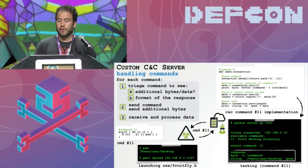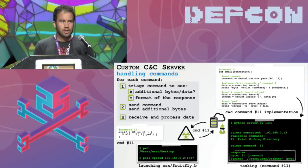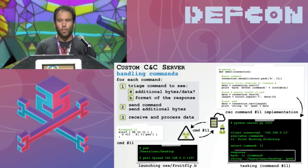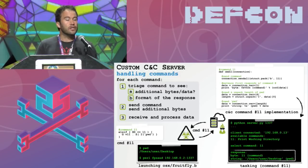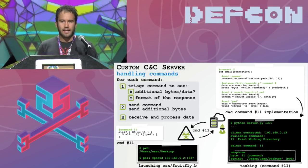The meat of the custom command and control server is obviously tasking and handling commands. There are about 25 commands and a variety of these had sub-commands, bringing the total to about 50. I built the custom C2 server to support all of these. Originally I did not know what these commands actually did. For each command I would triage it with the goal of understanding its protocol — did it receive additional bytes from the C2 server, and what is the format of the response? For example, command number 11 expects no additional bytes but responds with a byte and a variable length string — that's the malware sending back its current working directory.